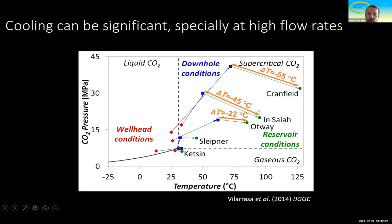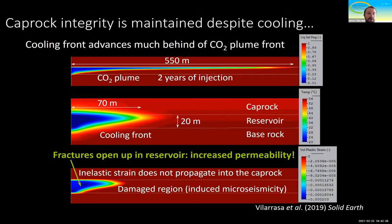For this, we performed simulations considering a normal faulting stress regime, injecting through a vertical well. Here we have the storage formation, with the caprock on top and the base rock below. After two years of injection, you can see that the CO2 plume has a radius of around half a kilometer.